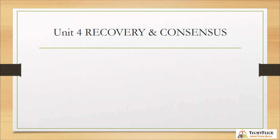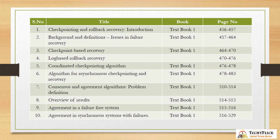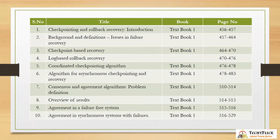Unit 4 is Recovery and Consensus. Checkpointing and Rollback Recovery — Introduction pages 456 to 457, Background and Definitions, Issues in Failure Recovery pages 457 to 464, Checkpoint Based Recovery pages 464 to 470, Log Based Rollback Recovery pages 470 to 476, Coordinated Checkpointing Algorithm pages 476 to 478, Algorithm for Asynchronous Checkpointing and Recovery pages 478 to 483. Consensus and Agreement Algorithms — Problem Definition pages 510 to 514, Overview of Results pages 514 to 515, Agreement in a Failure-Free System pages 515 to 516, Agreement in Synchronous Systems with Failures pages 516 to 529.